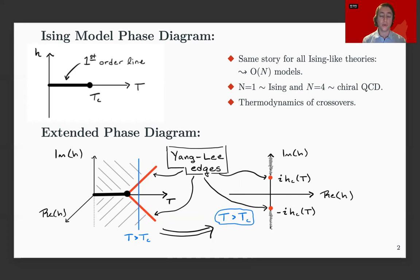Yes, the line of first-order phase transitions would end in a critical point. But after that, it would bifurcate into complex conjugate pairs of singularity that go off in the complex plane.